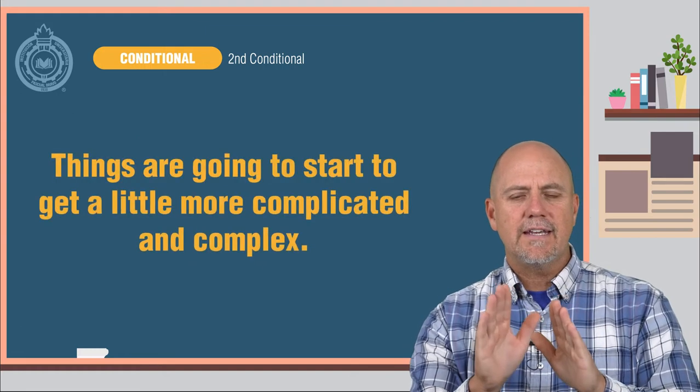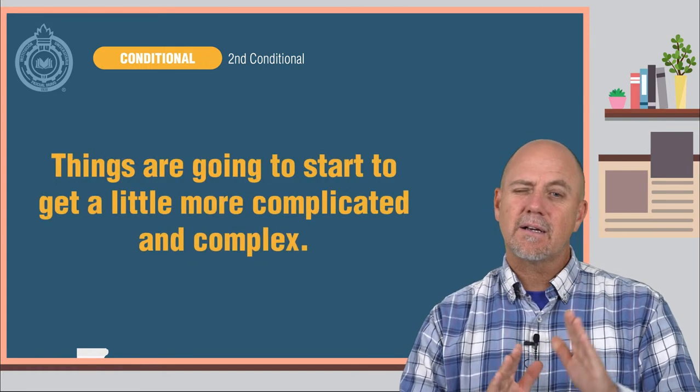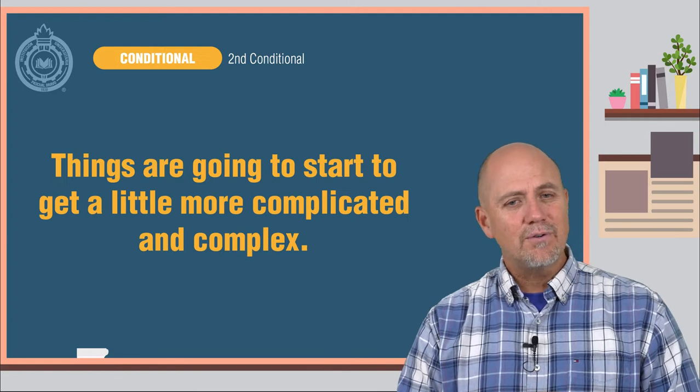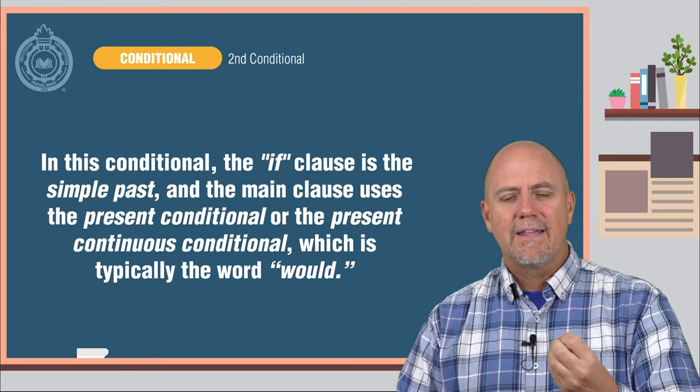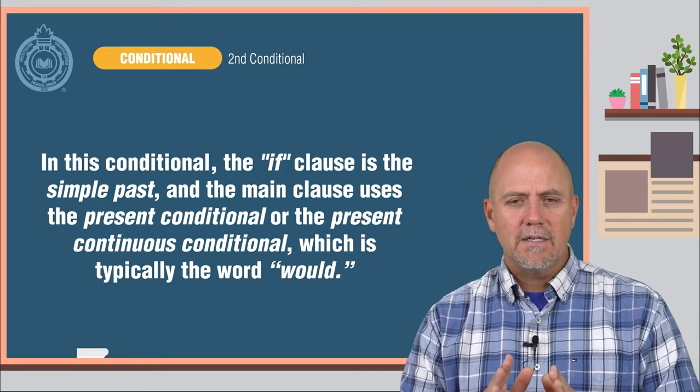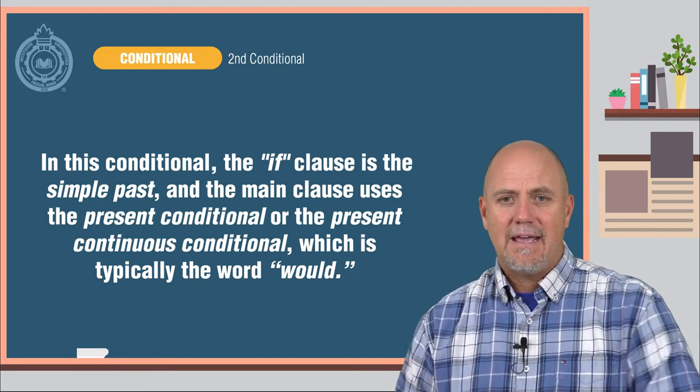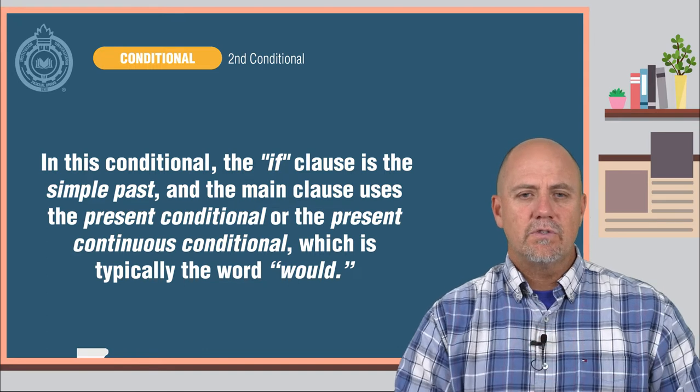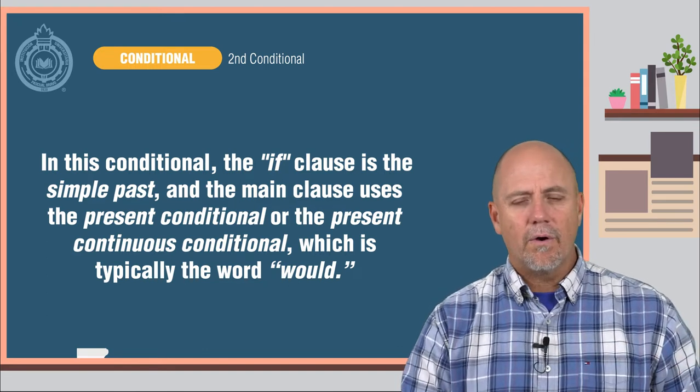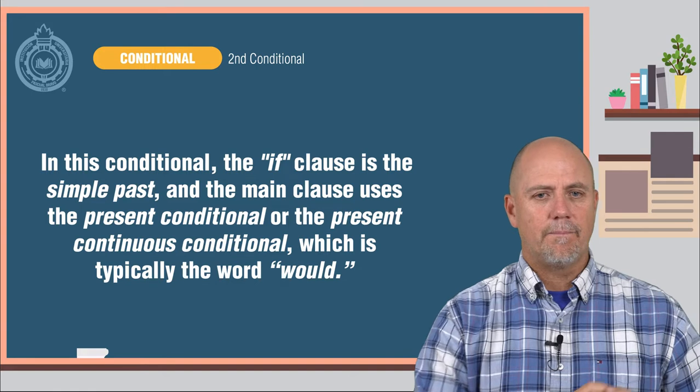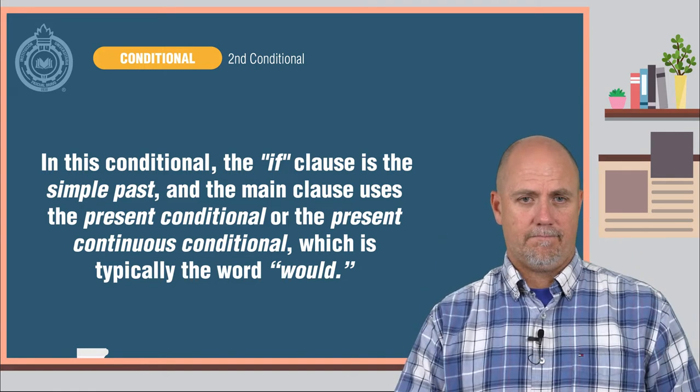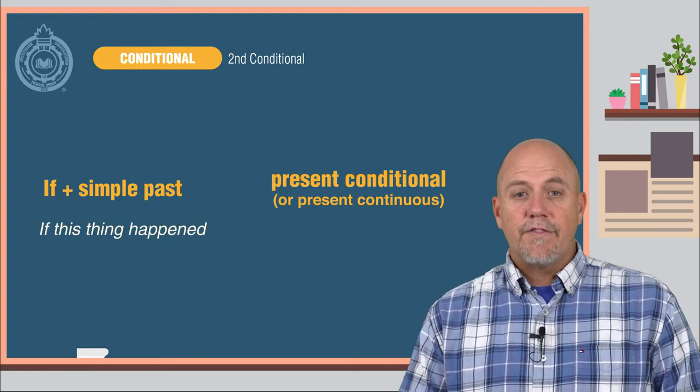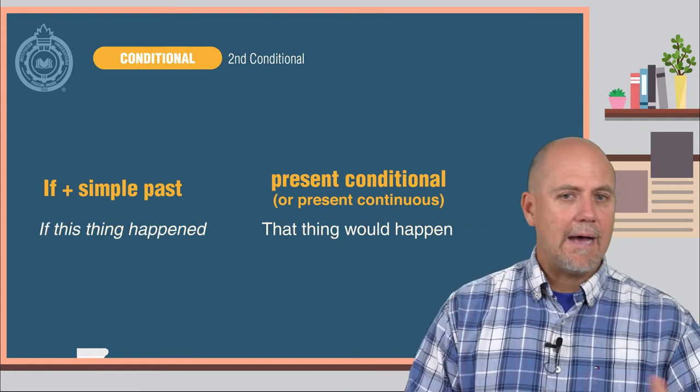Things are going to start to get a little more complicated and complex with the type 2 conditional sentence. In this conditional, the IF clause is the simple past, and the main clause uses the present conditional or the present continuous conditional, which is typically the word would. If this thing happened, that thing would happen.